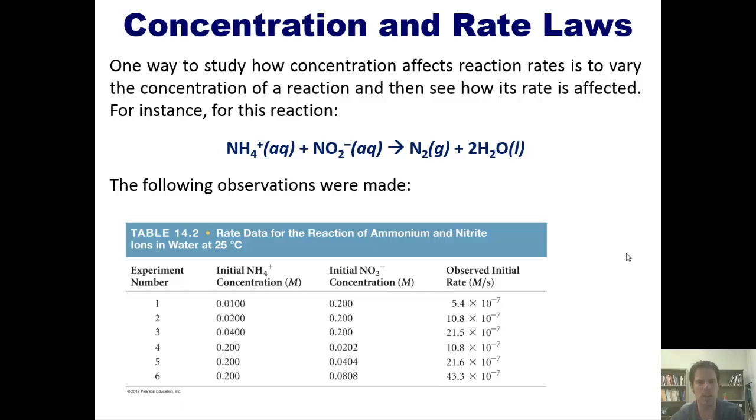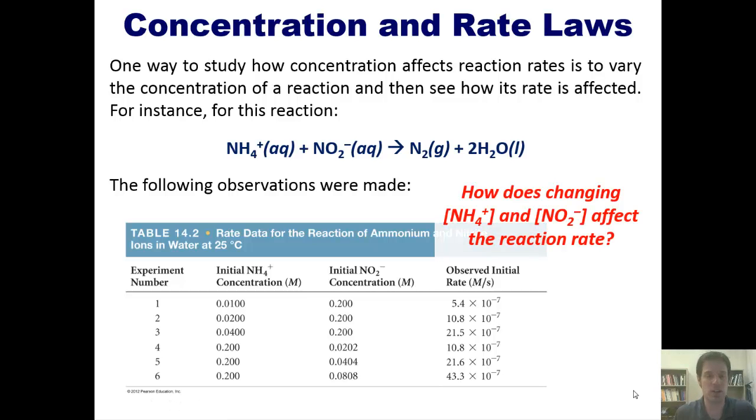That's a crazy table. You should notice in this table that they have varied the initial concentrations of these reactants. In experiments 1, 2, and 3, they kept the concentrations of NO2- constant while varying the concentration of ammonium and then they observed what happened to the rate or speed of the reaction. In experiments 4, 5, and 6, they did the opposite, keeping ammonium's concentration constant while varying the concentration of nitrogen dioxide. How does changing the concentrations of these two reactants affect the reaction rate? That's really the question we're trying to get at.